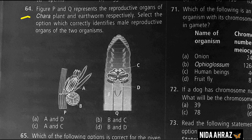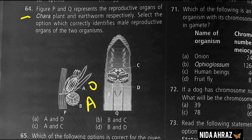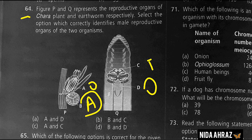Figures P and Q represent the reproductive organs of Chara plant and earthworm respectively. In figure P: A represents oogonium, B represents antheridium. In figure Q: C represents testes and D represents ovary. Antheridium and testes are male sex organs while oogonium and ovary are female sex organs. Option B is the correct choice.